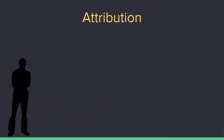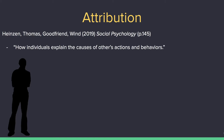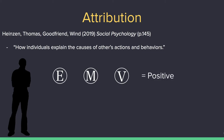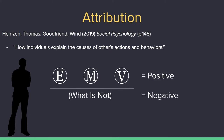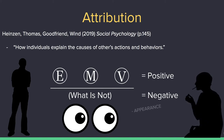So, attribution. Again, according to Thomas Heinzen and Wynne Goodfriend, attribution is how individuals explain the causes of others' actions and behaviors. When one develops a certain set of ethics, morals, and values, they're not just making a list of things they find positive — they make a list of what's negative as well. For the sake of preserving cognitive load, a person may observe an individual with no other detail than maybe their appearance, their demeanor, or their words, and attribute a positive or negative reason to this individual depending on how it reflects their own ethics, morals, and values.